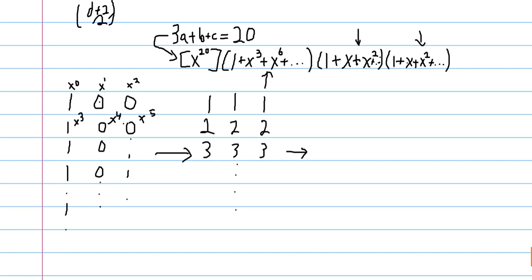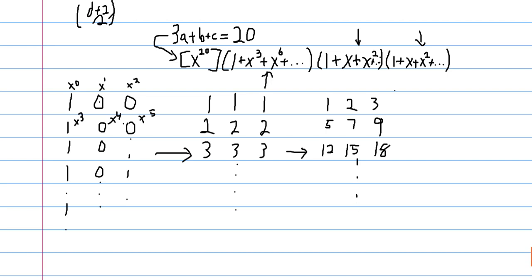And then we have to apply this partial sum thing once more. So we get 1, 2, 3, 4... this is 5, 7, 9 — I can't add today. This is 12, this is 15, and this is 18. And so we're continuing on in this way.